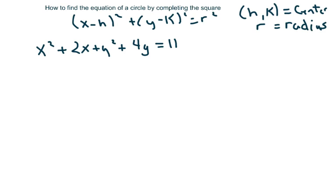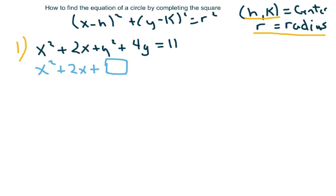Hi everyone, we're going to find the equation of a circle by completing the square. In a previous video we did a simple introduction to the circle, finding h and k, finding the radius, and drawing the circle. In this case we're given an equation and you should already know how to complete the square. This is good practice for when we get into ellipses in the next video, which will be a little more complicated.